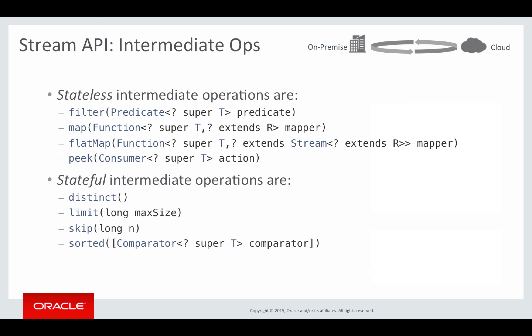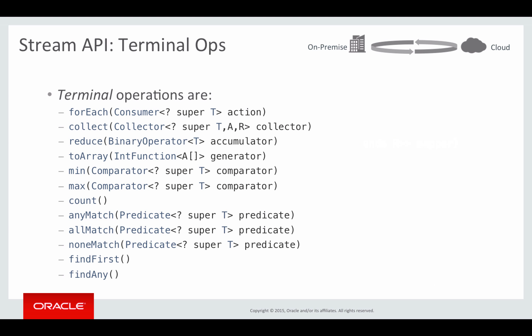Now let's look at the terminal operations the Stream API provides. Terminal operations trigger the evaluation of the stream pipeline and include many common aggregations such as min, max, and count; matching operations such as anyMatch, allMatch, and noneMatch which return a boolean; finder methods such as findFirst and findAny, typically used with an intermediate filter; forEach; and general-purpose reduce and collect operations. The collect operation also allows you to concatenate stream operations — for example, collecting distributed stream results into a set, list, or map and then creating another local stream pipeline on the client.